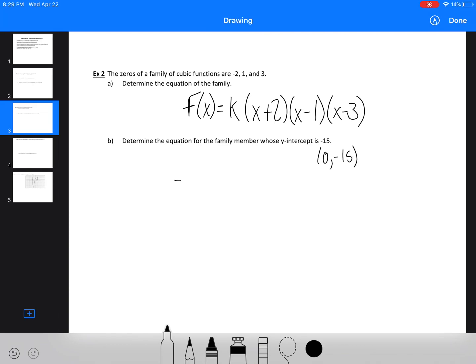So now, we're just going to sub in and find k. So we get 2 times negative 1, negative 3. So this is negative 15 equals 6k. k equals negative 15 over 6. Therefore,